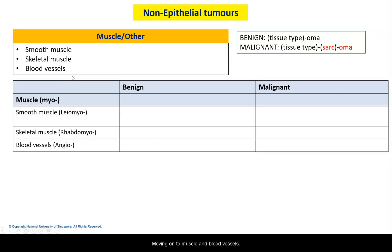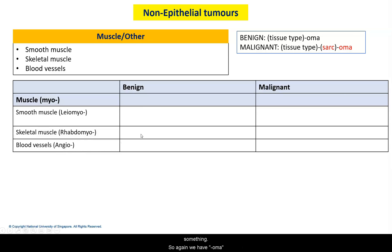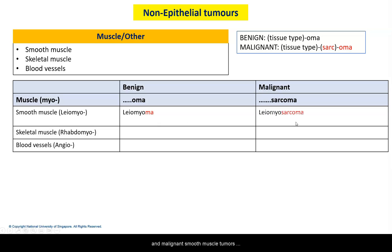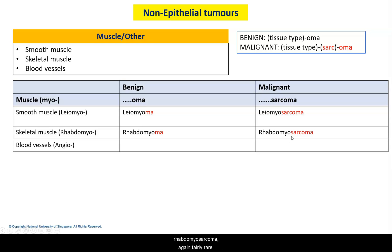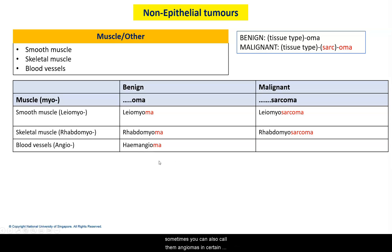Moving on to muscle and blood vessels. Smooth muscle is termed leio-myo, skeletal muscle is rhabdo-myo — myo referring to muscle. Blood vessels are usually termed angio-something. Benign smooth muscle tumours are called leiomyomas, and malignant ones leiomyosarcoma. Benign skeletal muscle tumours are rhabdomyoma — these are pretty rare — and malignant counterparts are called rhabdomyosarcoma, also fairly rare. For blood vessels, benign tumours are known as hemangiomas, sometimes called angiomas, and malignant tumours are usually called angiosarcoma.